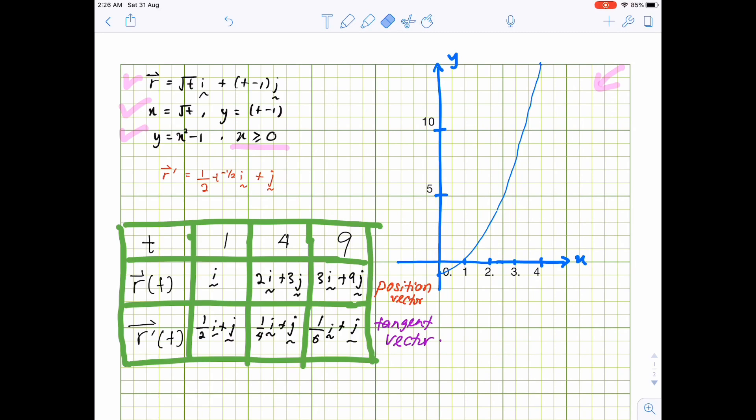So we go to the sketching. We start with the position vector. When t equals to 1, we just have i, which is the meaning of that is 1 unit in x direction from the origin. Somewhere here.